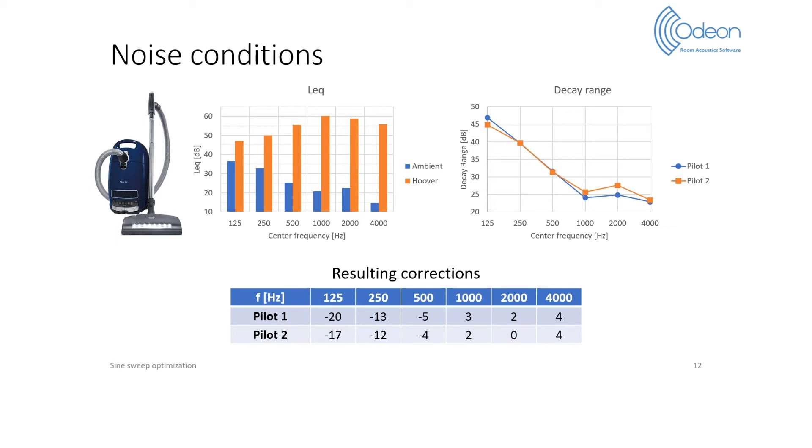Each pilot results in a set of automatic spectrum corrections displayed in the following table. The two pilots end up with similar corrections, again with differences up to 3 dB between them. The corrections reduce the lower frequency bands considerably, in order to boost the three higher octave bands.